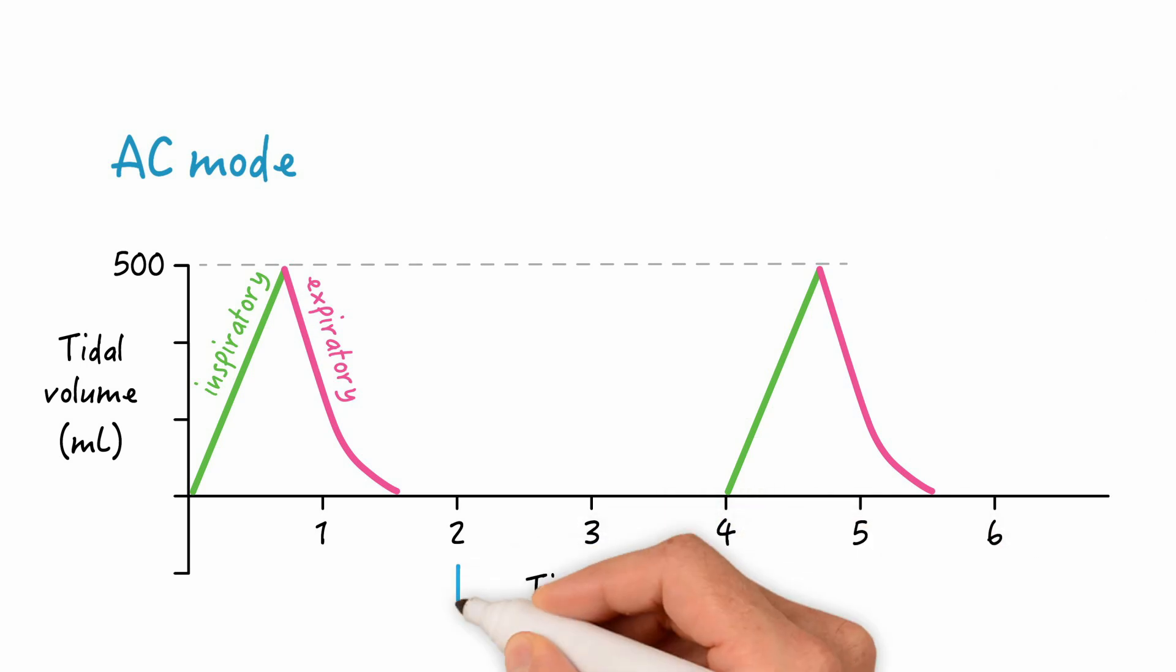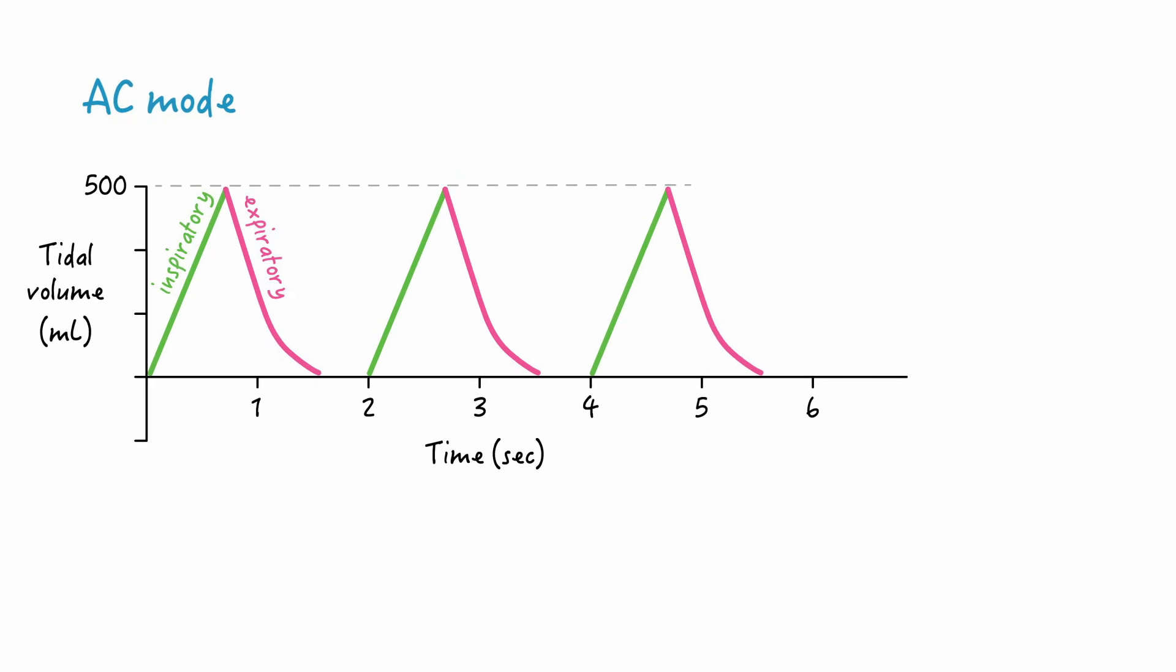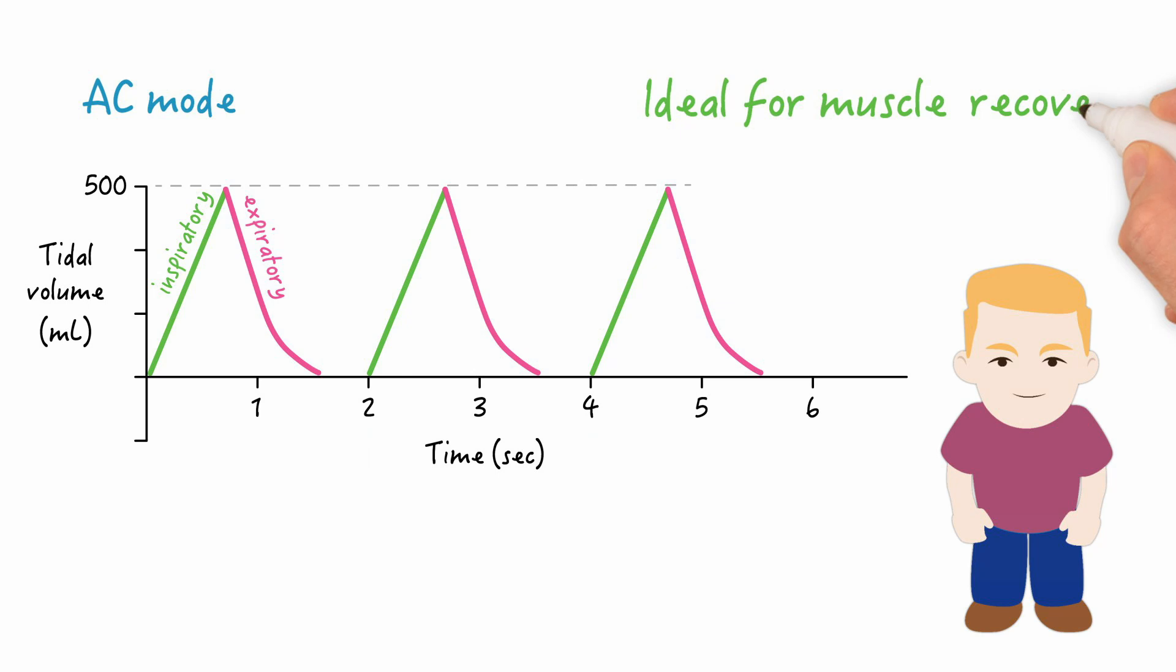But let's say at the 2 second mark, the patient attempts a breath. What happens? Well, in the assist-control mode, the patient merely attempts to trigger a breath and the ventilator will take over and deliver the full set tidal volume. Notice how the delivered volume is the same as the other breaths where there was no patient trigger. This is what makes the AC mode preferable for the initial mode. Remember, the goal of initiating mechanical ventilation is to alleviate the work of breathing of the patient and to allow the ventilatory muscles to recover. This mode is ideal for muscle rest and recovery because the patient does not have to work so hard to get a full volume breath. They just merely have to initiate or trigger a breath and the ventilator does the rest.